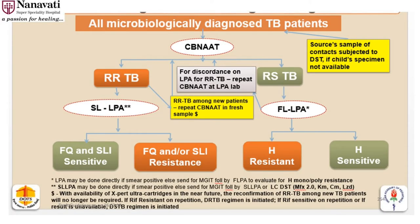Looking at this particular slide on the diagnosis of drug-resistant TB developed by the RNTCP: if you get RR-TB on GeneXpert, you immediately do the second-line LPA, look at fluoroquinolones and injectables, and decide on the treatment regimen. If you have rifampicin-sensitive TB, you do the first-line LPA and look for mono-resistance to isoniazid.